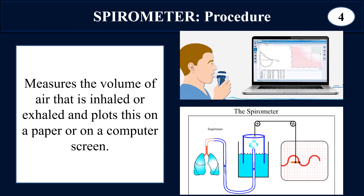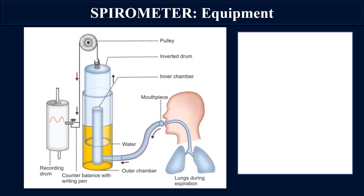This is an old spirometry machine that was used before — it is easy to understand its principle. The old spirometer consisted of an inner chamber connected to a mouthpiece, an outer chamber containing liquid (water), and an inverted drum. The inverted drum is connected via a counterweight to a pen on a recording drum.